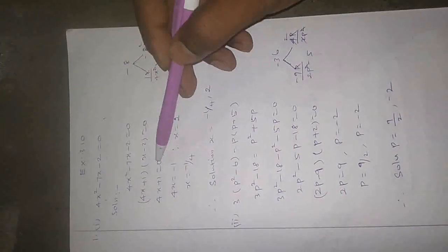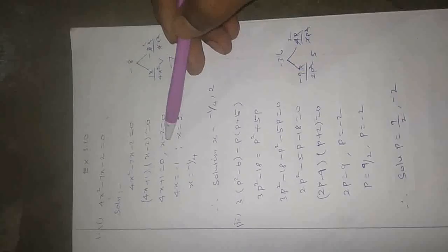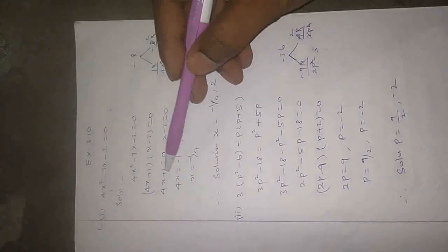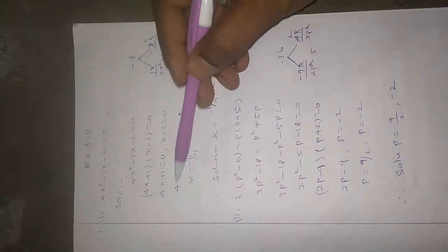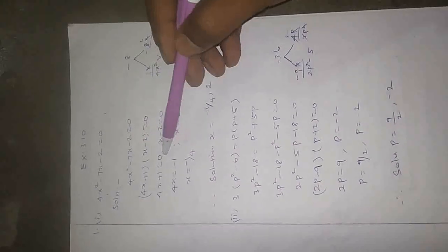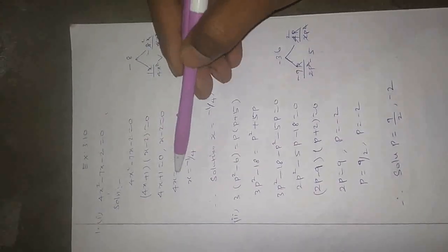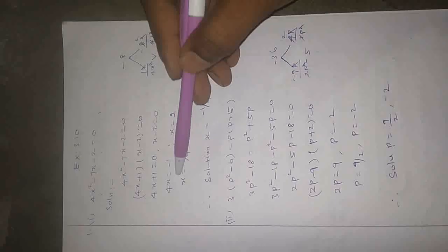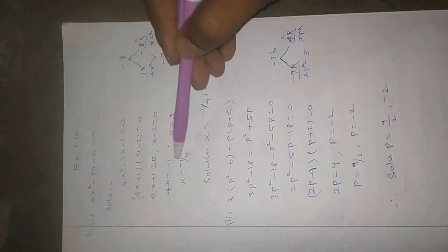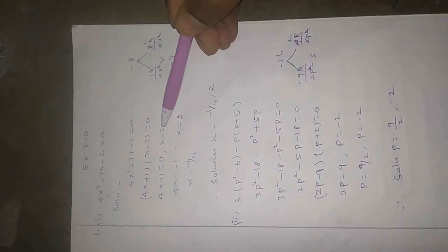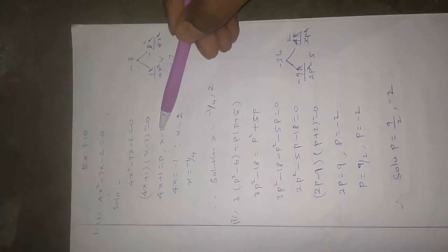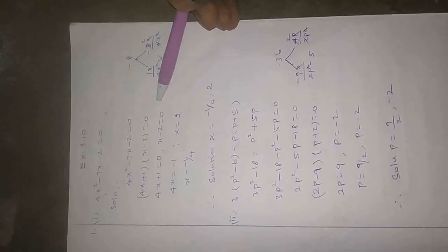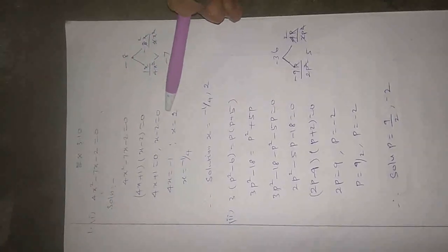Setting each factor equal to zero: 4x plus 1 equals 0, and x minus 2 equals 0. From the first: minus 1 moves to that side, then divide by 4, so x equals minus 1 by 4. From the second: minus 2 converts to plus 2, so x equals 2.